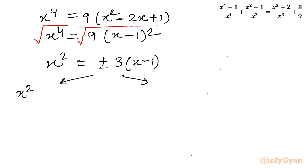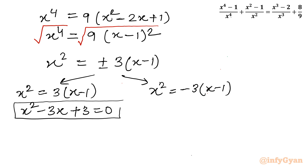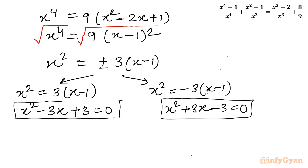We frame two quadratic equations. With the plus sign: x² = 3(x minus 1), giving x² minus 3x + 3 = 0. With the minus sign: x² = minus 3(x minus 1), giving x² + 3x minus 3 = 0. We now solve both quadratic equations.